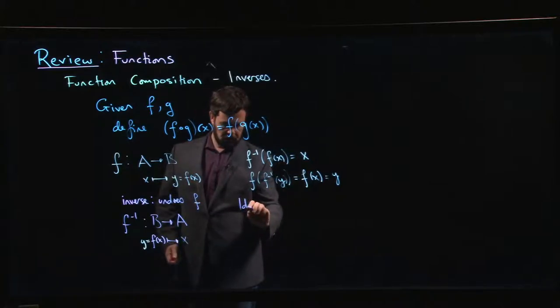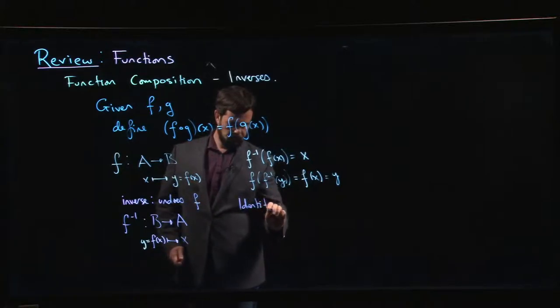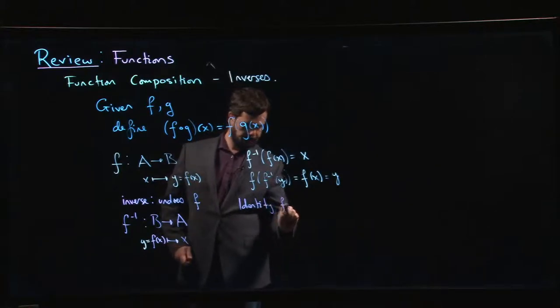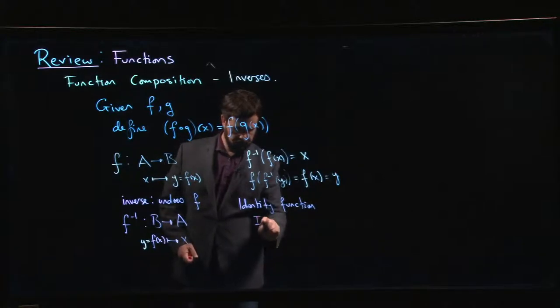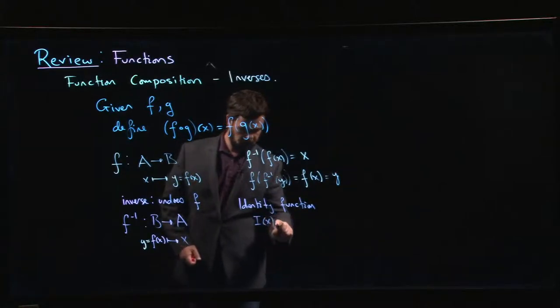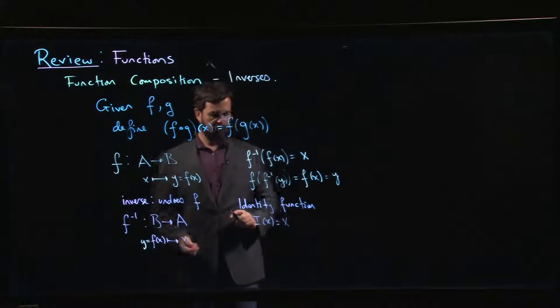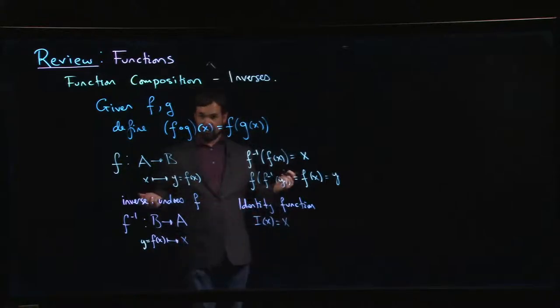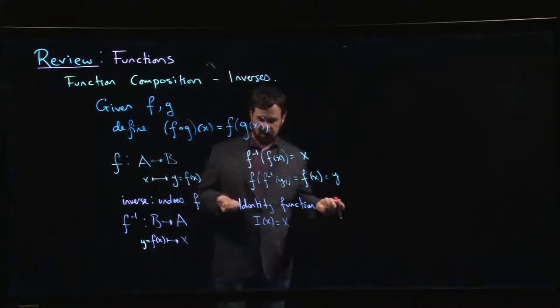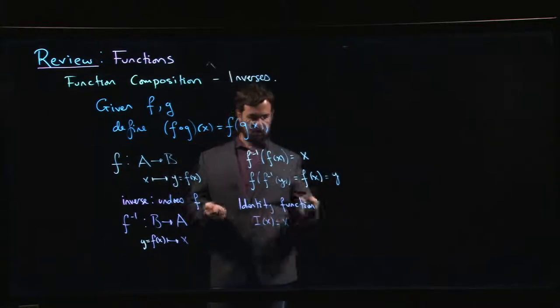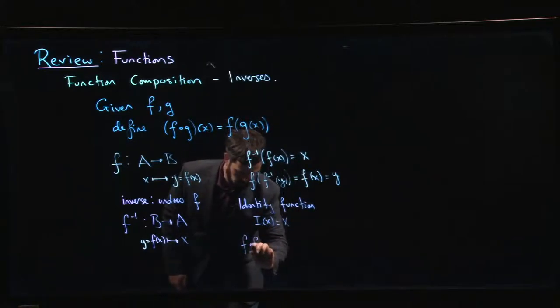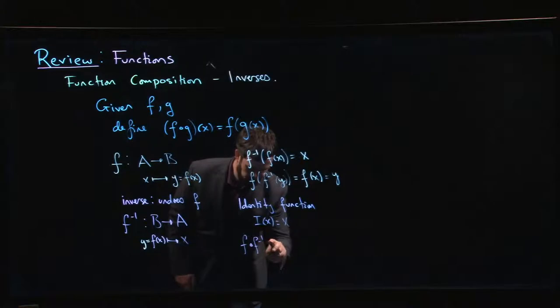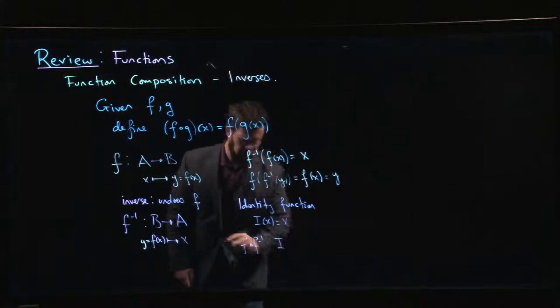There's something called the identity function. So maybe we call it, say, i. i of x equals x. Every set comes with an identity function that just associates every element with itself. It goes from a set to itself.